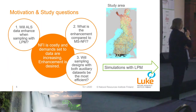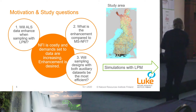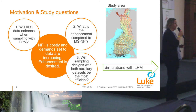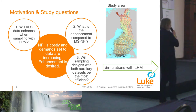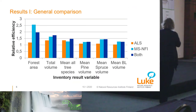We are now entering the study questions. What we wanted to see particularly was whether ALS data could be used or does it enhance the design. What will be the possible enhancement compared to the Multisource National Forest Inventory maps? And what happens if we put these two data sources together? Our study region is shown on the map. The study was carried out by simulating the sampling: we kept the sample size constant but changed the set of auxiliary data in the LPM, and for each sample we estimated the inventory results.